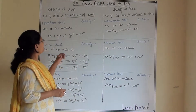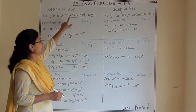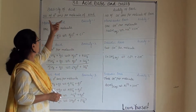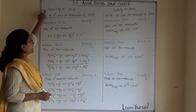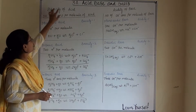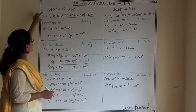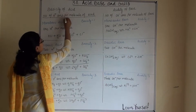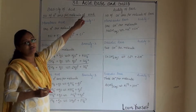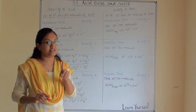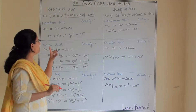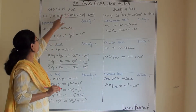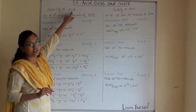Now let us see the bifurcation of basicity of acid and acidity of base. First of all, what is meant by basicity of acid? It means the number of H+ ions generated per molecule of acid — one molecule of acid and how many H+ ions it is generating. This concept is referred to as the basicity of acid.